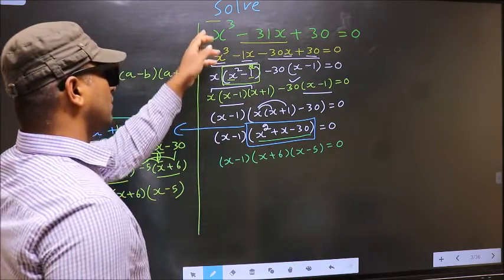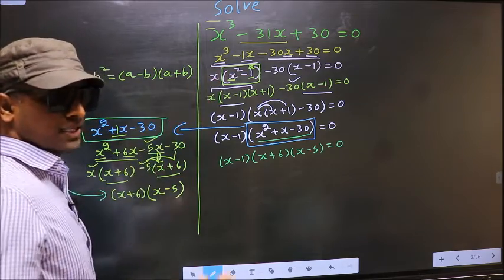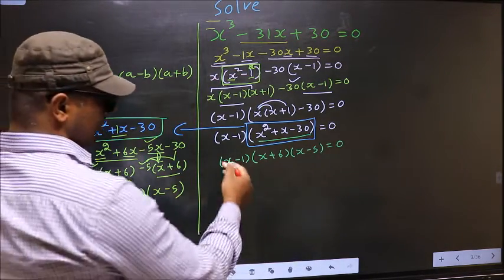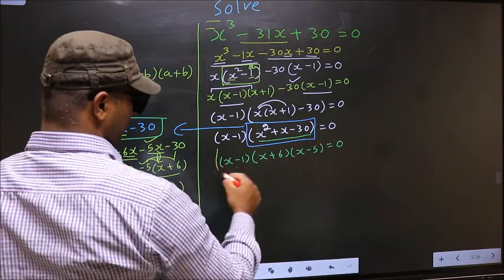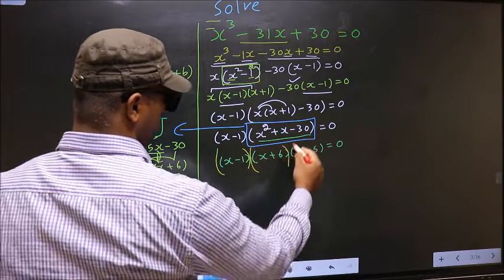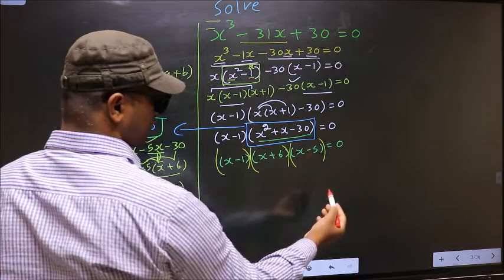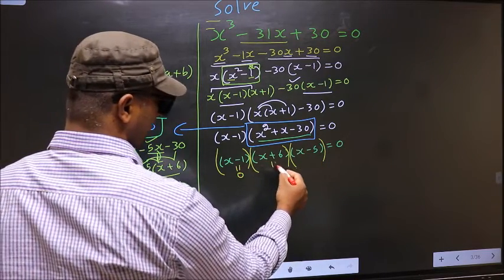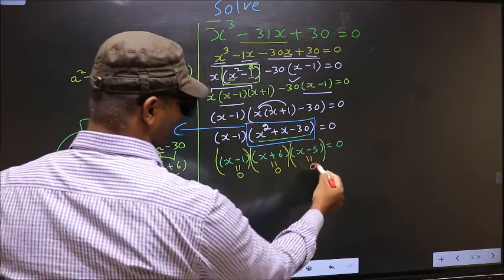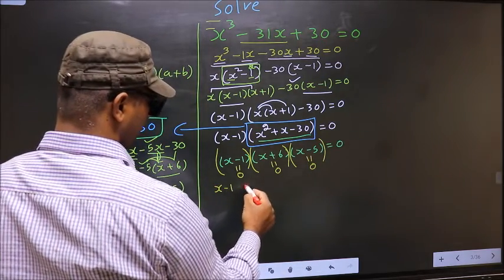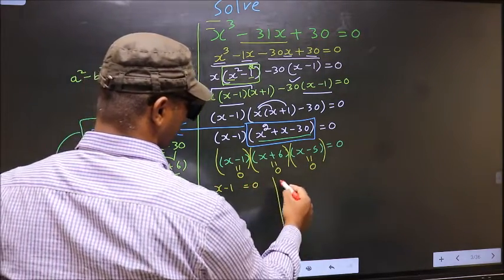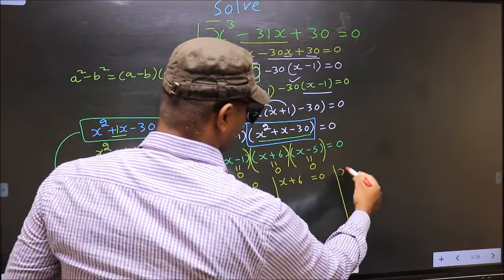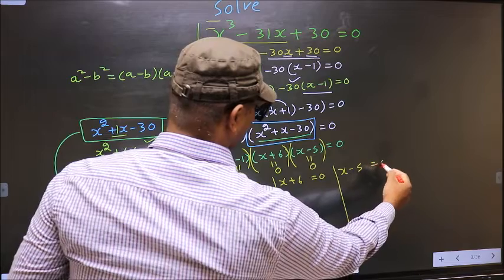They told us to solve, means we should get the values of x. Over here we got product brackets of brackets equal to 0. So to get x values we should equate each bracket to 0. That is x minus 1 equal to 0, x plus 6 equal to 0, x minus 5 equal to 0.